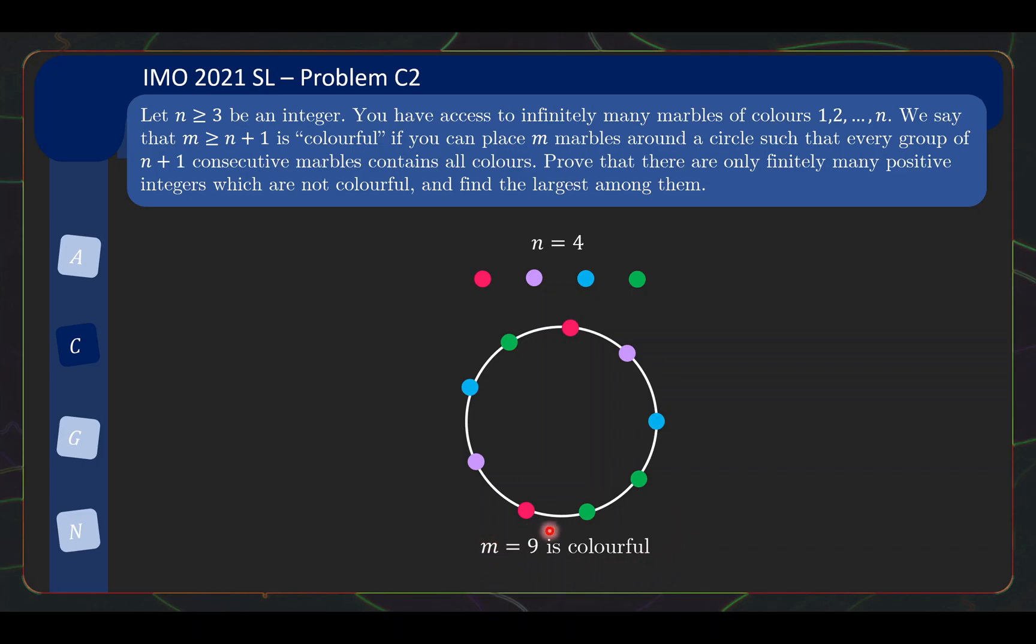And I want to show is n equals to 9 colorful. Well, in this case, n equals to 9 is colorful because I can put 9 marbles around a circle such that every group of 5 marbles contains all colors. So this consecutive 5 marbles here has all the colors. So does this collection of 5 consecutive marbles and so on. So n equals to 9 here is colorful.